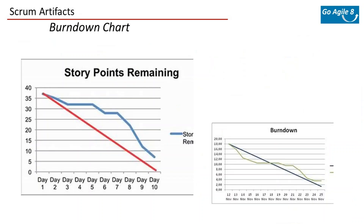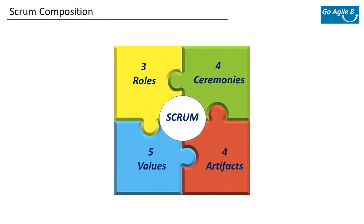The last artifact is the sprint burndown chart. This is a chart that tells you how much work is left in the sprint. Every day, a quick glance shows if work is progressing correctly relative to the days remaining — it helps you track progress toward the sprint goal. I won't go into too much detail at this stage as I'll cover all metrics again at some point.